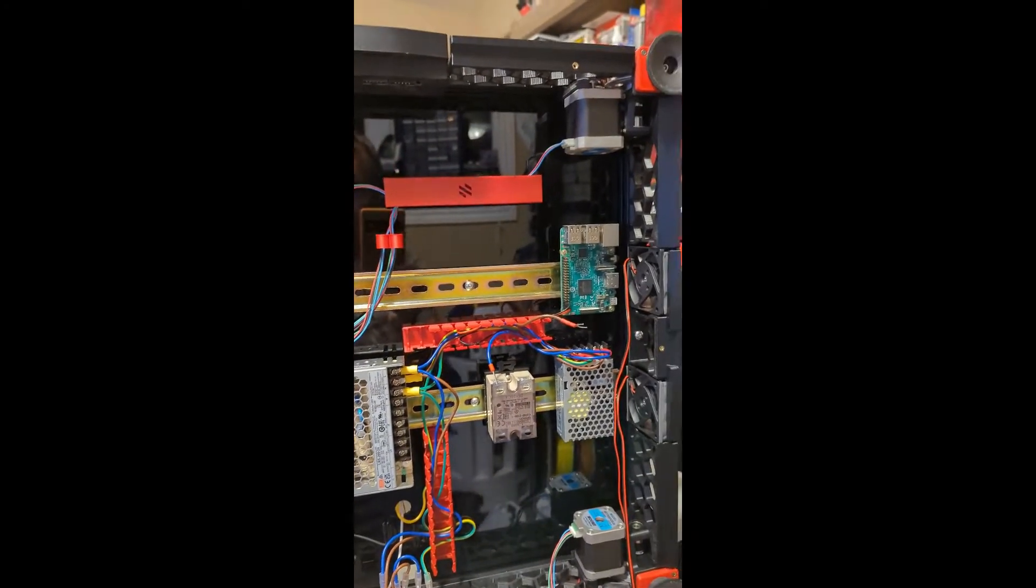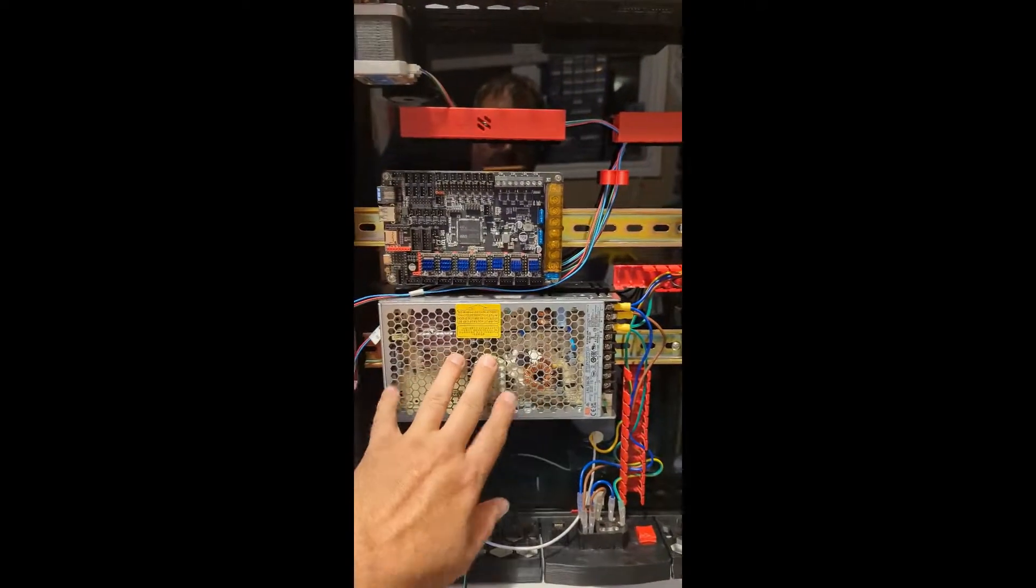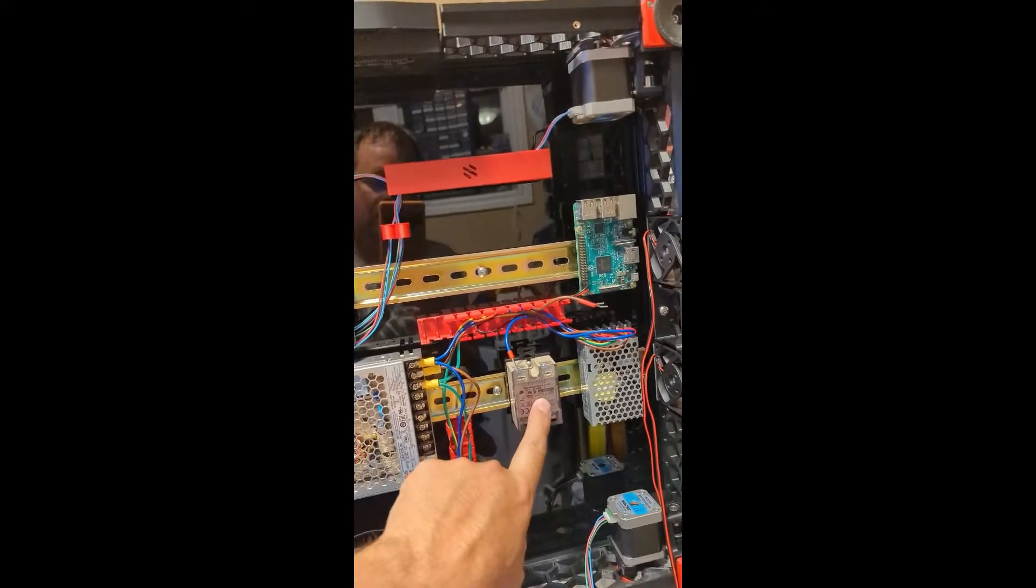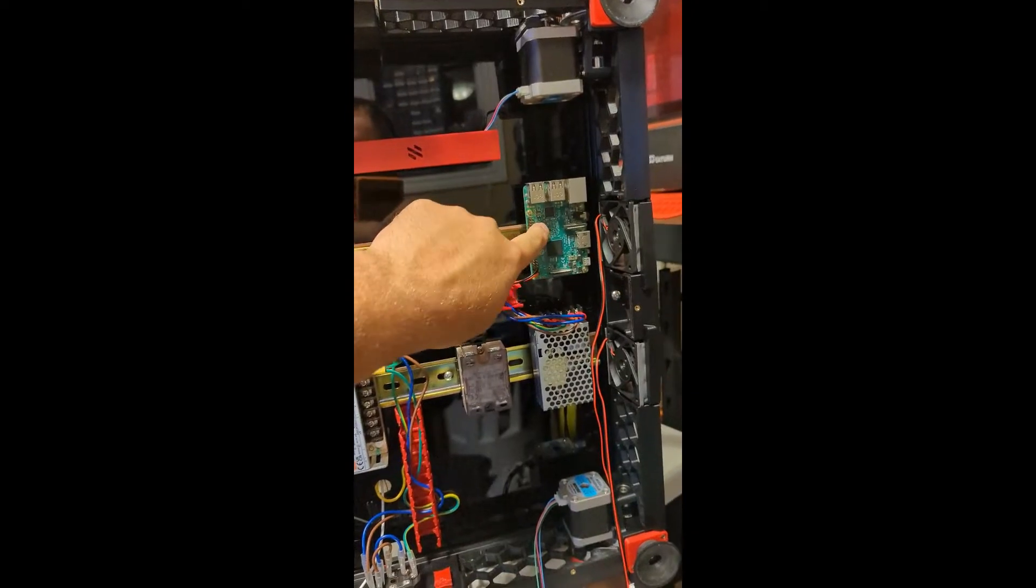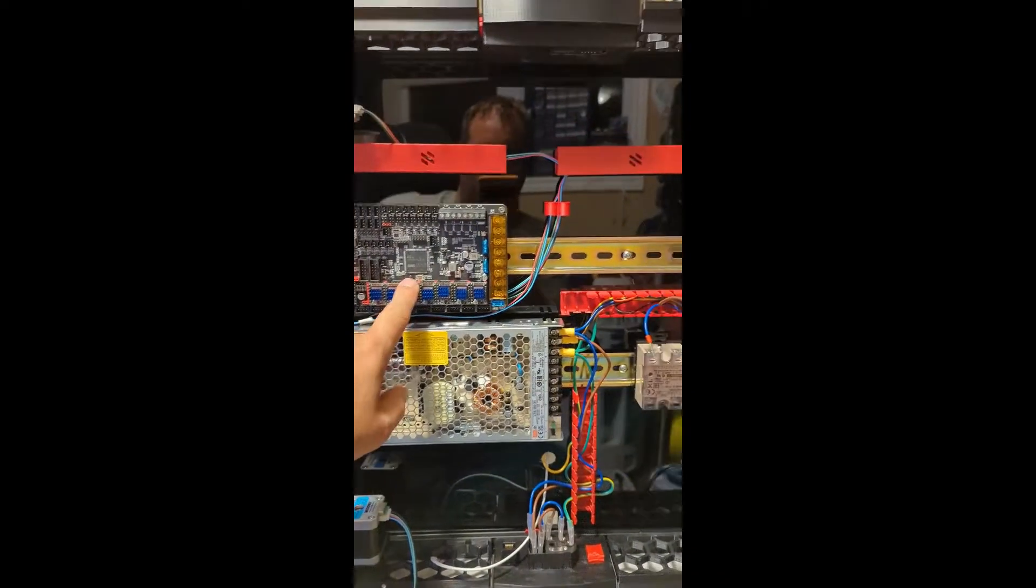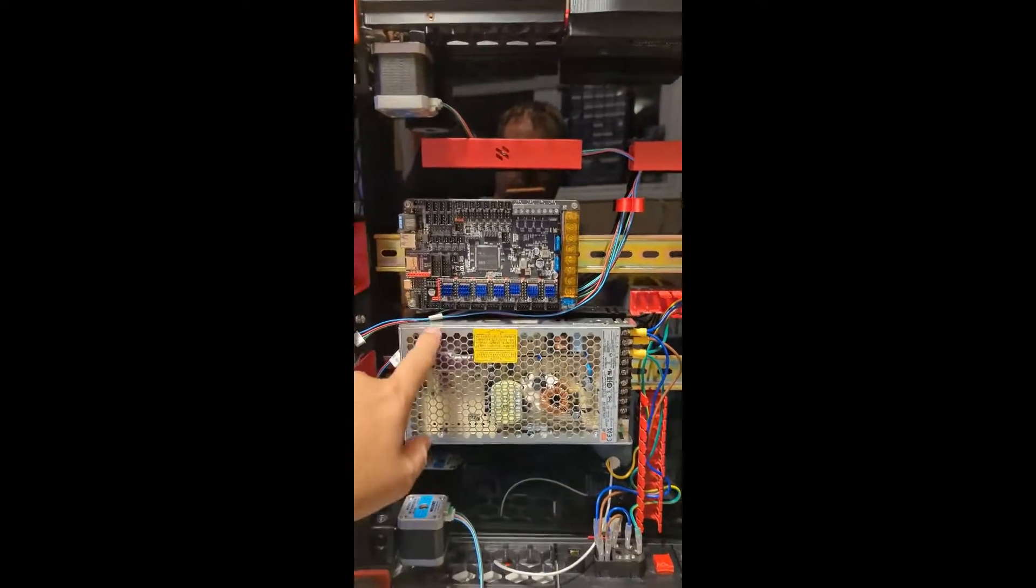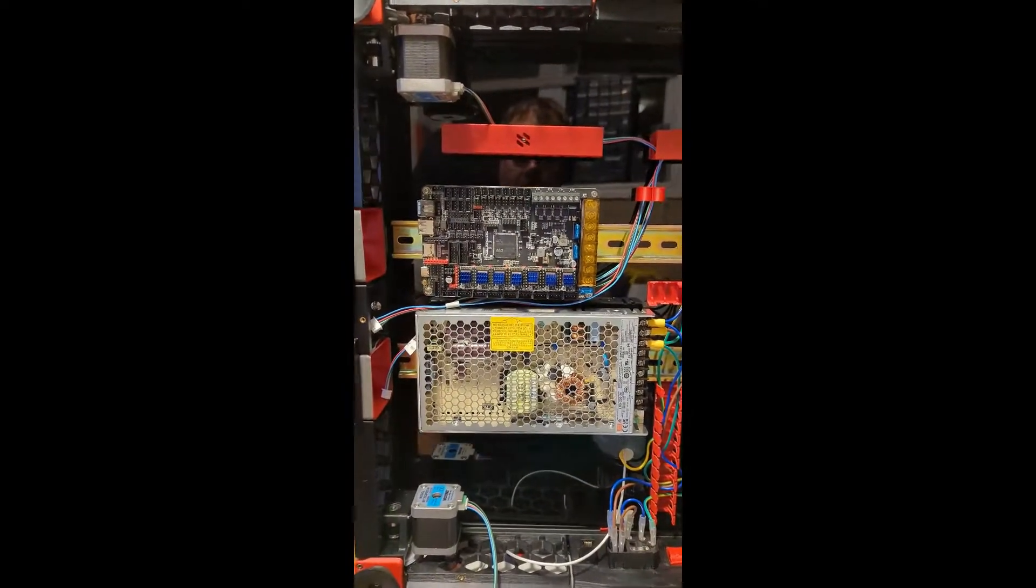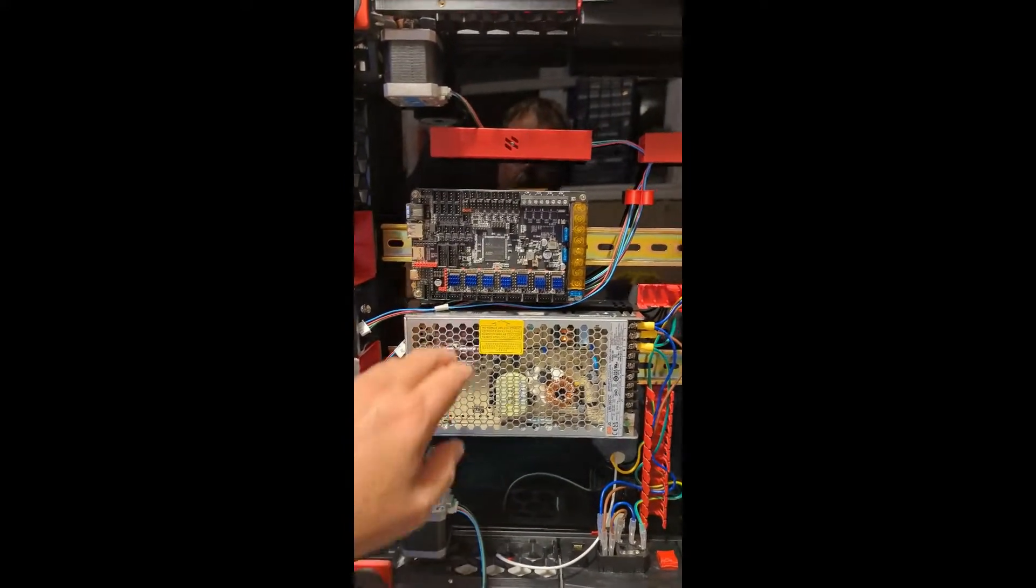So I've got my main power supply installed, relay installed, fly volt power, my Raspberry Pi and the Octopus board installed. I've got my separate motors installed.